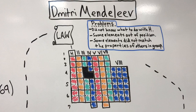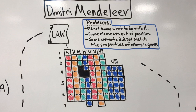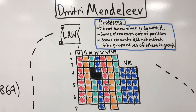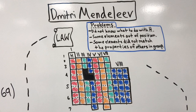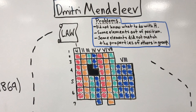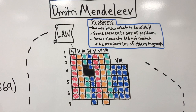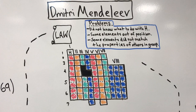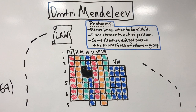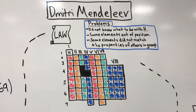He had seven periods in his table, making up the rows, and eight groups, making up the columns. There were a few problems with Mendeleev's ideas. He did not know what to do with hydrogen, because it acted similar to other elements but didn't fit in other parts. He also had some elements which were out of position, ordered backwards, and some elements which did not match the properties of others in their group. But the genius behind Mendeleev's periodic table was that he left room for growth — he saw spaces and holes in his table for elements which hadn't been discovered yet, and even made predictions for these elements, which would later be proved to be true.